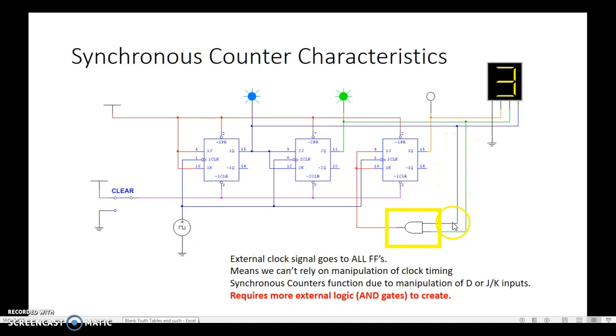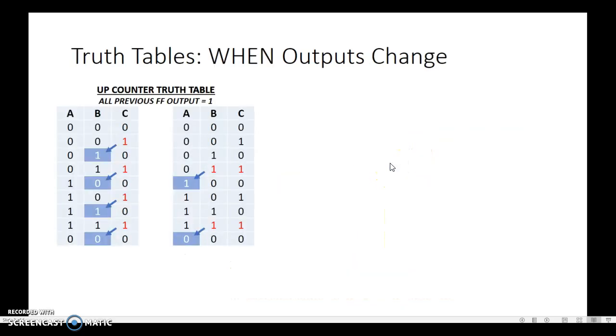That AND gate down in the bottom right corner was saying when I have a 1 that comes from both of the previous flip-flops, and I need both of those to output a 1, that's what's going to force this to go into toggle mode. And when this is in toggle mode, then the next time the clock hits, it will flip. So the truth table looked like this.